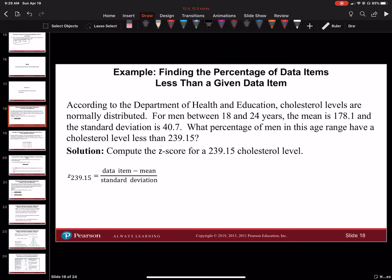We want to compute the z-score for 239.15. The z-score from the last section is equal to the data item minus the mean over the standard deviation. So the data item is 239.15, minus the mean which is 178.1, all over our standard deviation, which is 40.7.